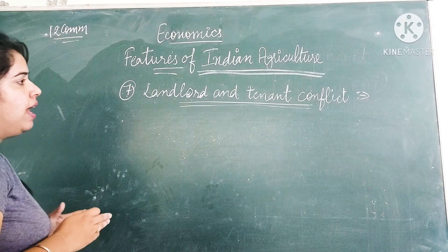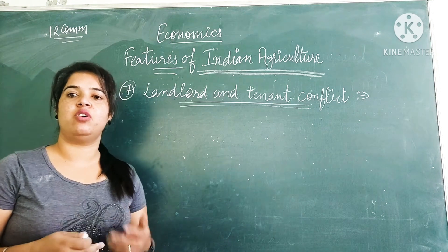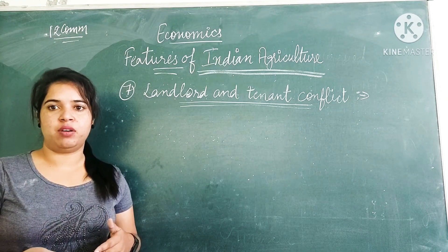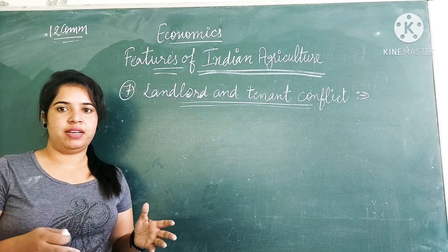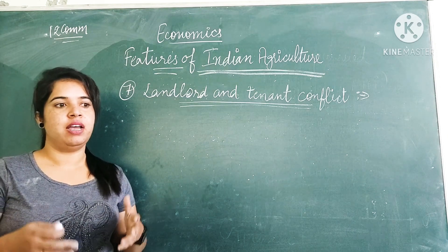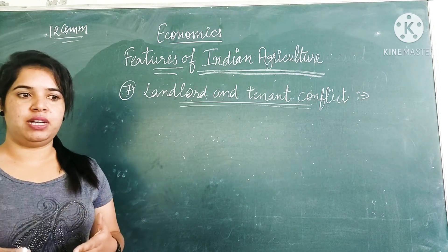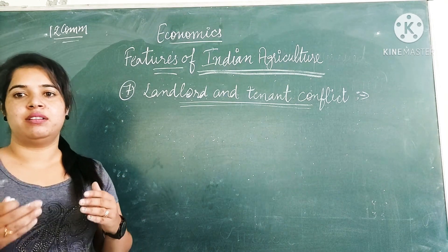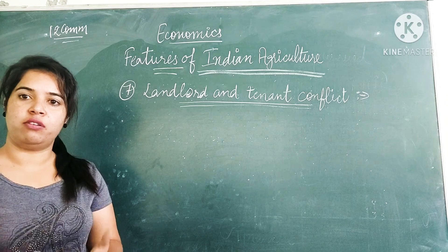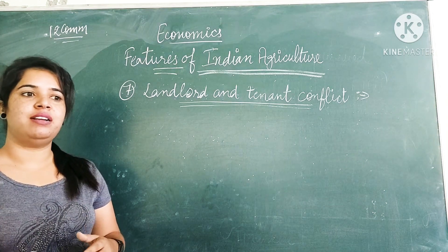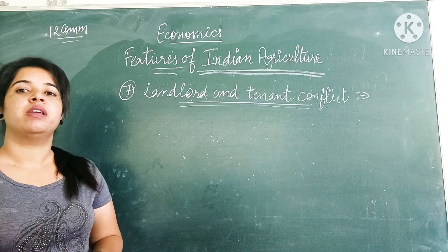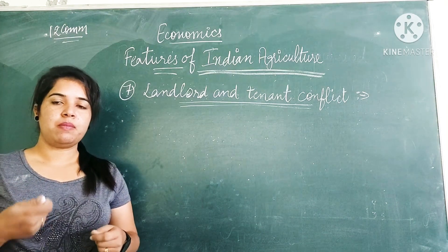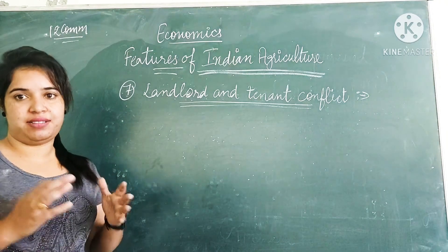The next feature is the landlord and tenant conflict. In India there is always a conflict between landlords and tenants. Tenants are the people who are actually farming, while the owners collect rent from them. Landlords enjoy a high position and collect rent at regular intervals, leaving tenants with only a very small share for survival. As a result, no surplus is left for improving the soil, which keeps agriculture stagnant and backward.